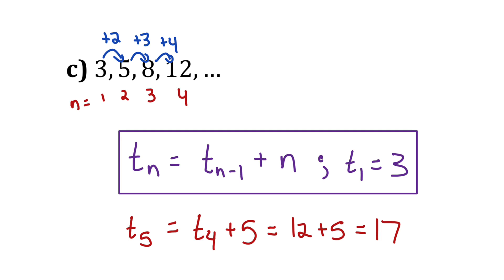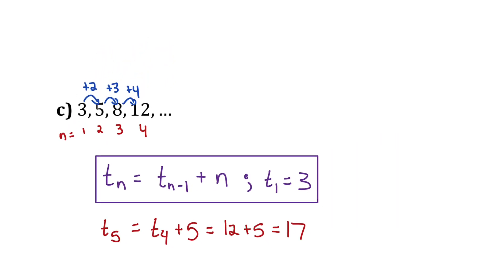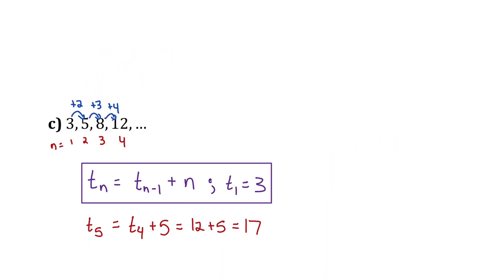If I wanted the sixth term, I would just add six to 17, giving me 23, and so on. So hopefully you now have a good idea of how recursion formulas work. Within a recursion formula, we need the value of the previous term, but we can also use the term number n in the formula as well. Make sure to go to jensenmath.ca and get the practice problem set to practice these questions.